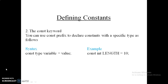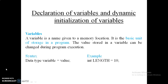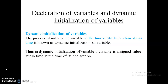Our next topic is declaration of variables. Variables are the names of memory locations — they are the basic units for storing values in the program. Their values can change during execution, making them the opposite of constants. The syntax for declaring a variable is: data type, then variable name, optionally equals a value. For example: int length = 10 — the variable length is assigned 10, and it can be changed as per the program's requirement.